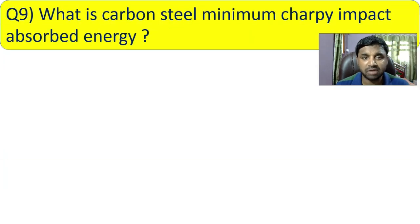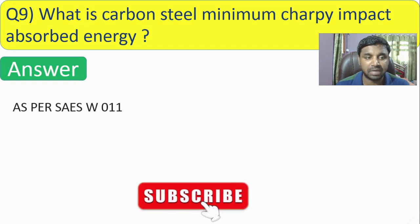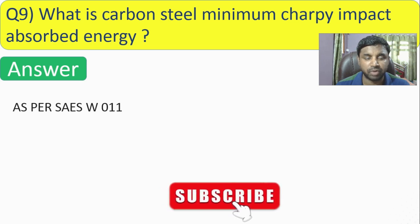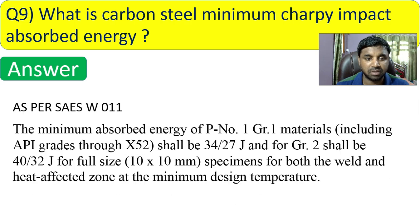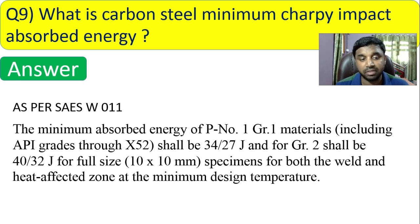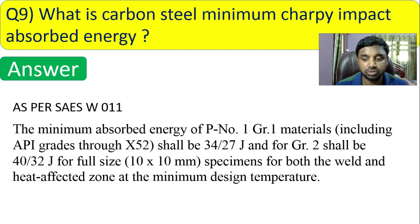Question 9: what is the minimum Charpy impact absorbed energy requirement for carbon steel? As per SAES-W-011 (Saudi Aramco Engineering Standard), the minimum absorbed energy for P-number 1, Group 1 material shall be 34/27 Joules, and for Group 2 material shall be 40/32 Joules, for a full-size 10×10 mm specimen for both welds and heat affected zones.